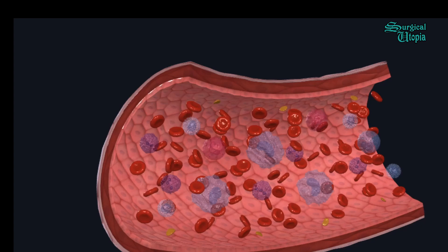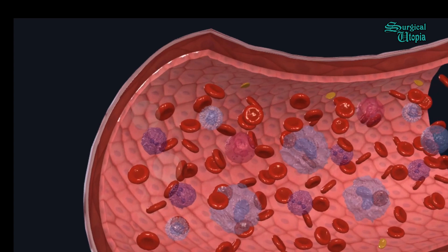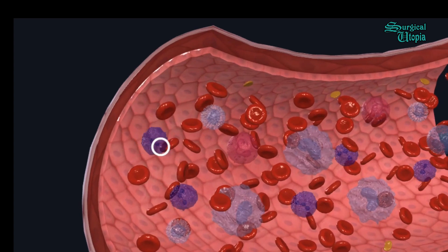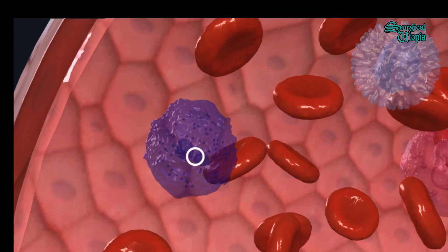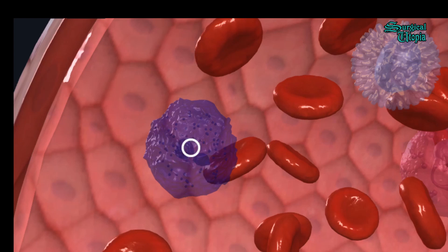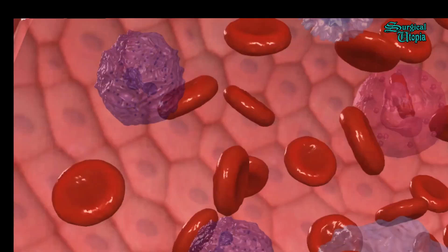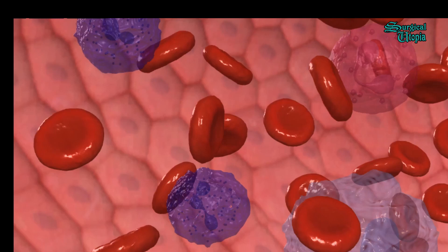Next we come to the leukocytes, also called white blood cells. There are different types. The first, shown here in purple, is the neutrophil. On closer look, neutrophils account for around 60 percent of the total leukocytes in the bloodstream. They have a multi-lobed nucleus — here you can see one that is bilobed, and another neutrophil that has three lobes.